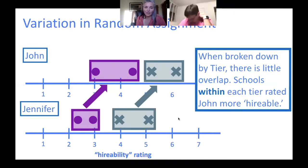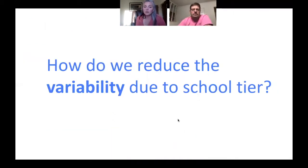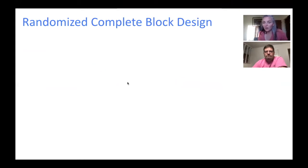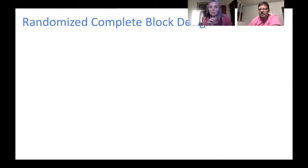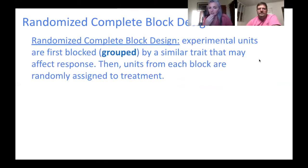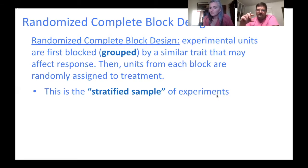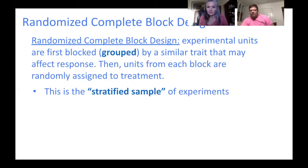How are we going to reduce the variability due to school tier? This is what Mr. Bobby was talking about in our last video — let's take our two groups and make sure we split them evenly. That's called a block design, where we make subcategories and then randomly divide within those subcategories — but they're called blocks. Often this will be males and females, age groups, or something like that.